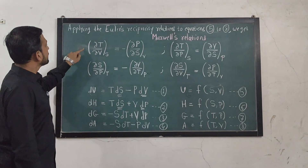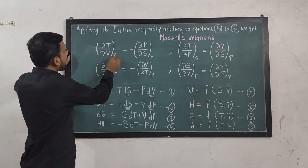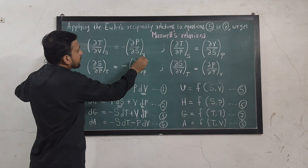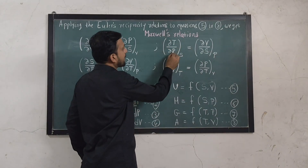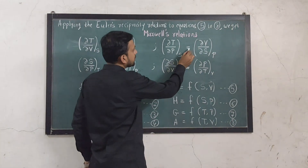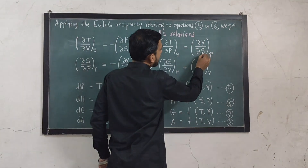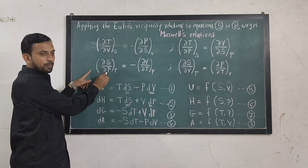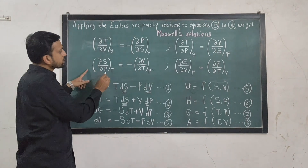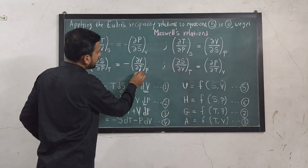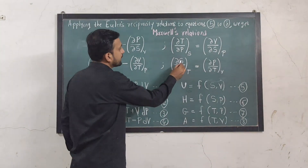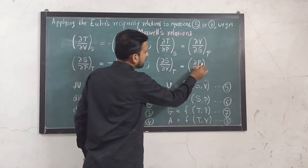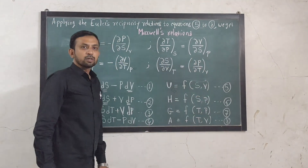The first Maxwell relation is: ∂T/∂V at constant entropy is equal to negative ∂P/∂S at constant volume. The second: ∂T/∂P keeping entropy constant is equal to ∂V/∂S keeping pressure constant. The third: ∂S/∂P keeping temperature constant is equal to negative ∂V/∂T keeping pressure constant. The fourth: ∂S/∂V keeping temperature constant is equal to ∂P/∂T keeping volume constant.